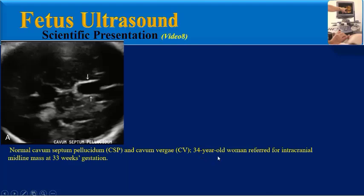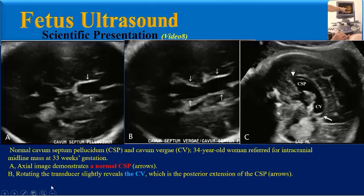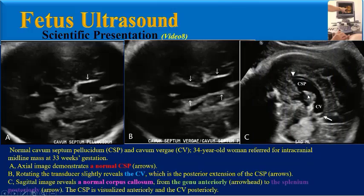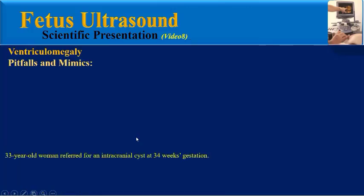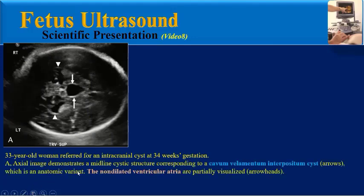Teaching case: A 34-year-old woman referred for intracranial midline mass at 33 weeks gestation. An axial image demonstrates a normal cavum septum pellucidum. Rotating the transducer slightly reveals the cavum vergae, the posterior extension of the CSP. A sagittal image reveals a normal corpus callosum from the genu anteriorly to the splenium posteriorly. Another case: A 33-year-old woman referred for an intracranial cyst at 34 weeks gestation; axial image demonstrates a midline cystic structure corresponding to a cavum vellum interpositum cyst, an anatomic variant.